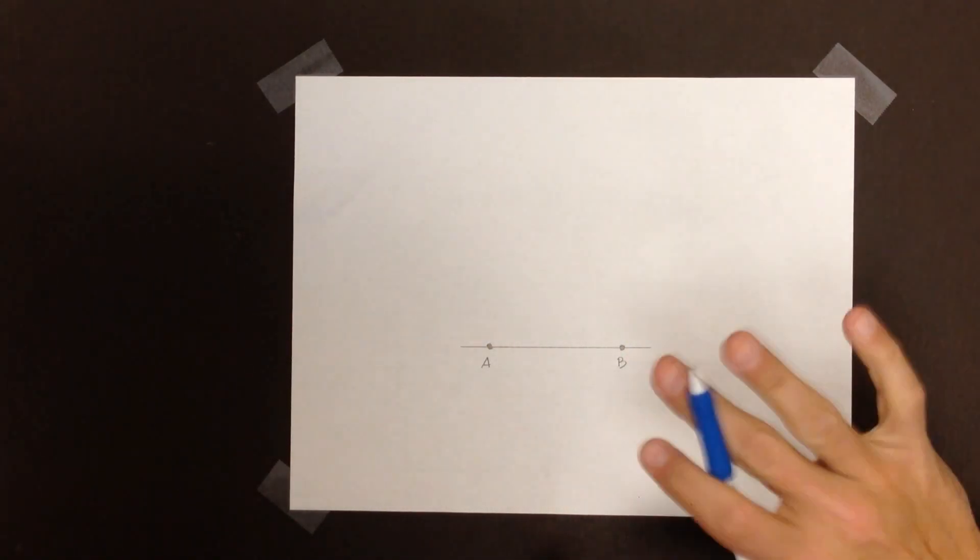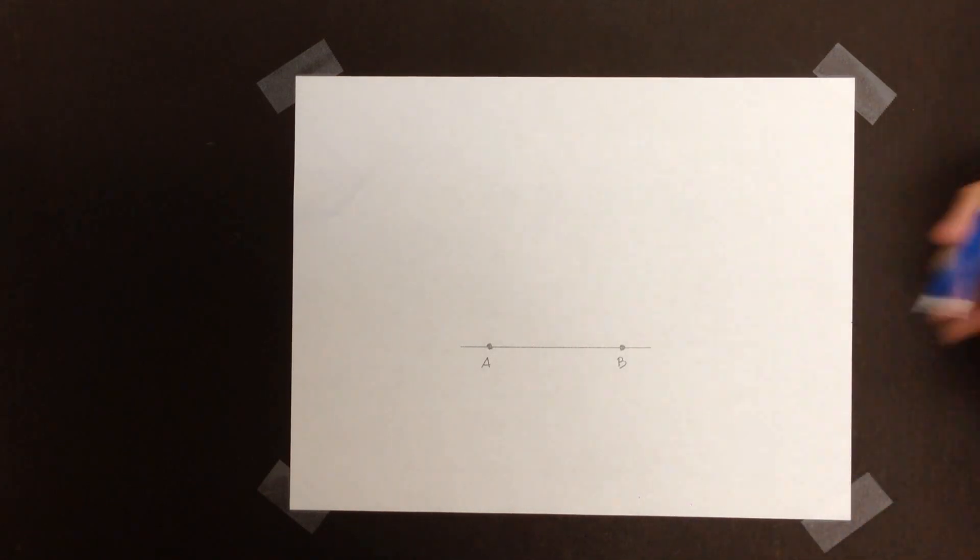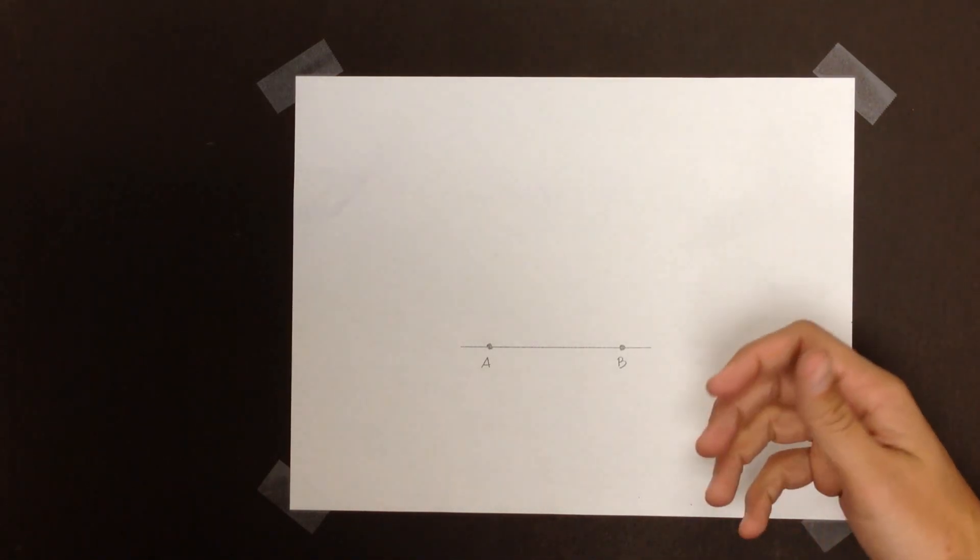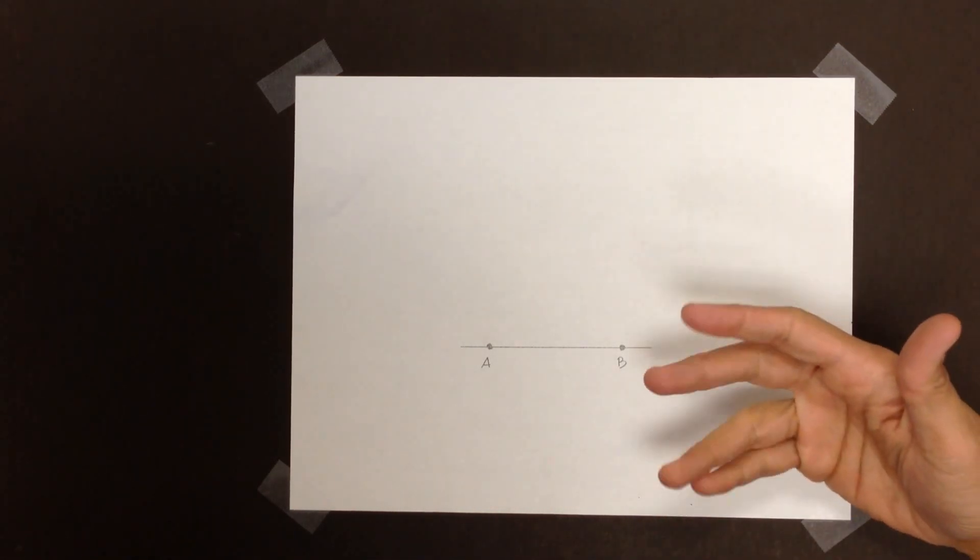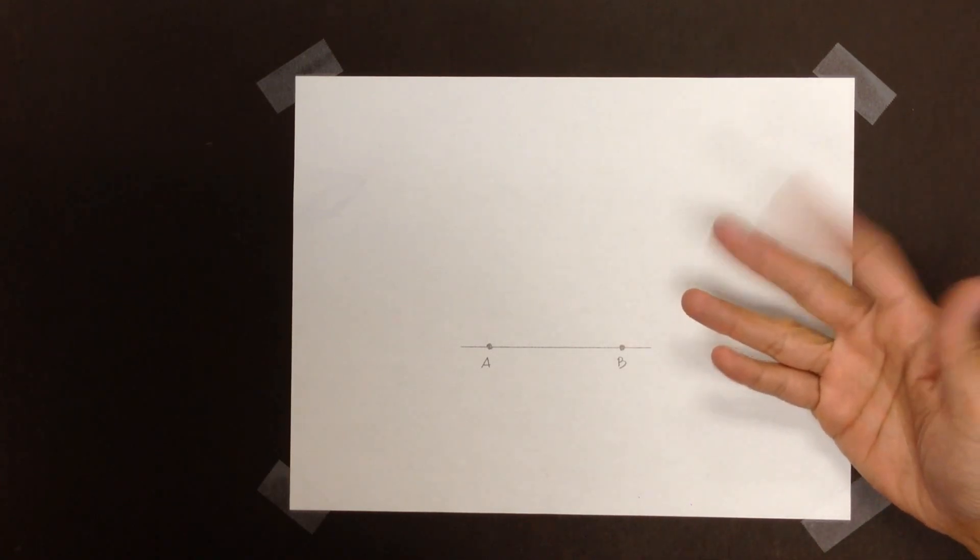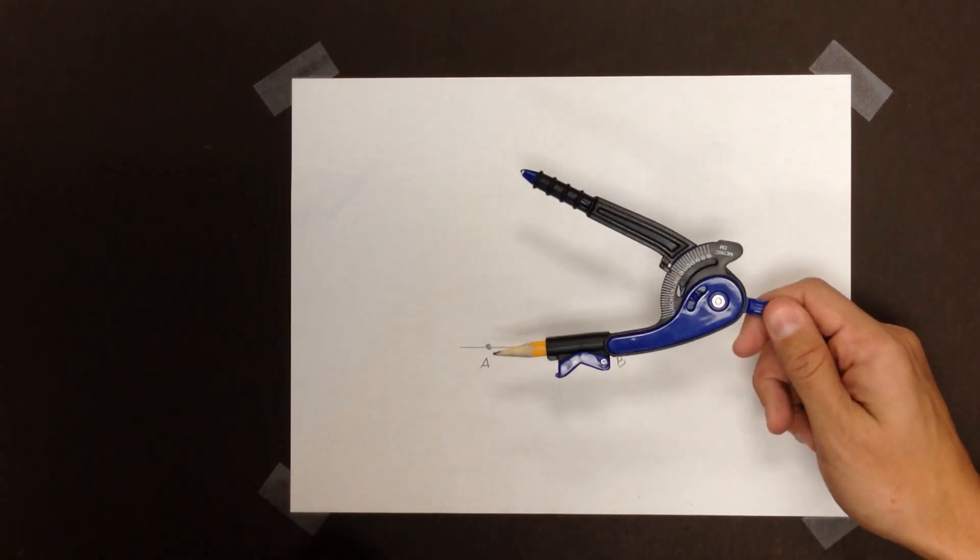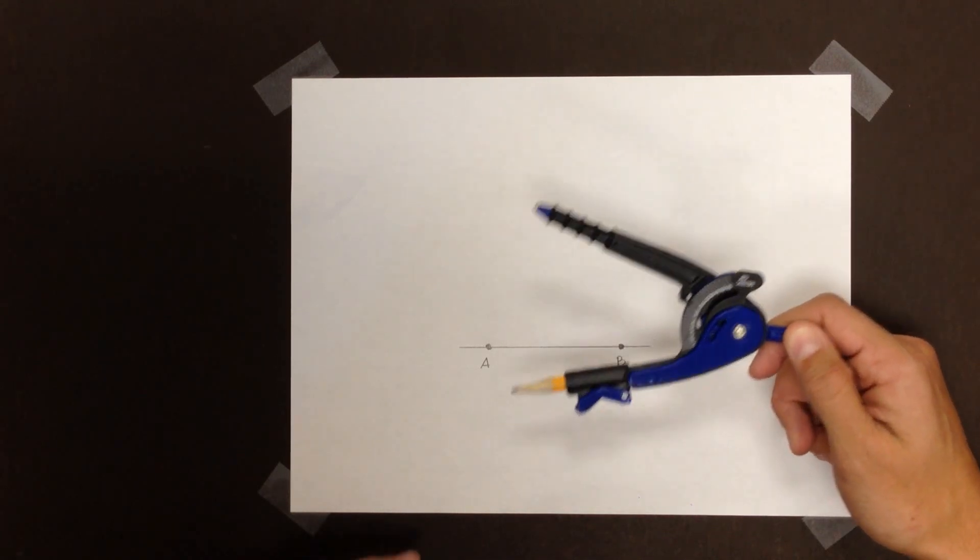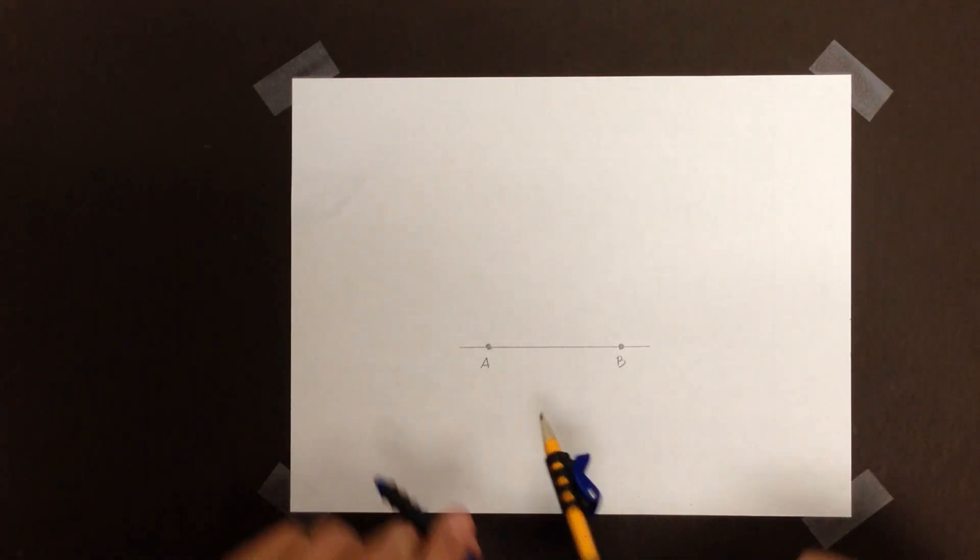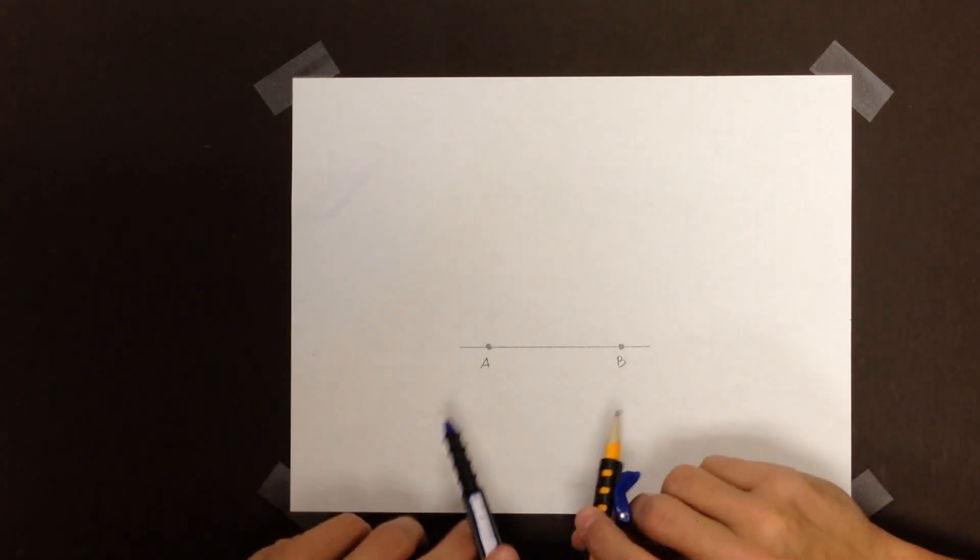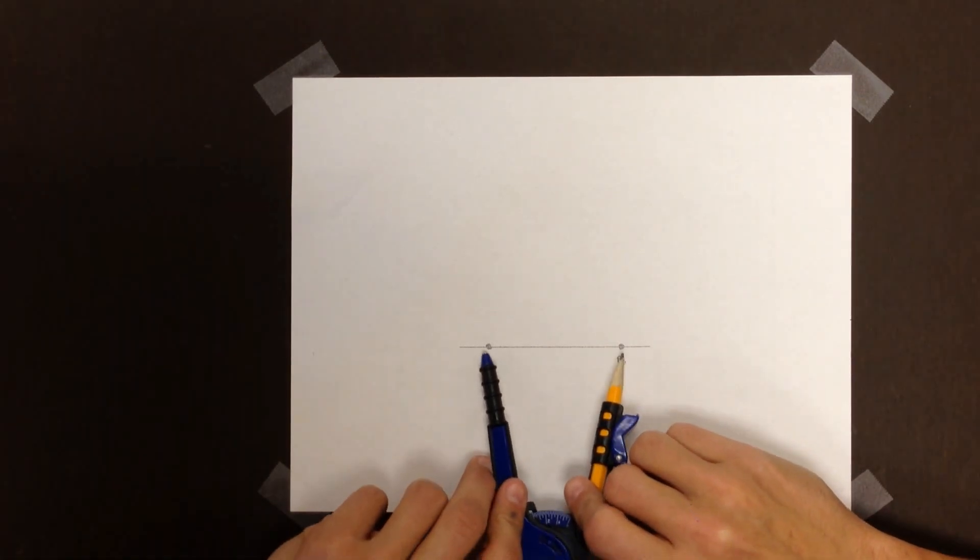Now I want to construct a rhombus. Properties of a rhombus mean that it's a parallelogram except all the sides are congruent. When we want to construct anything with congruent sides, the best tool we can use is a compass. A compass is amazing at ensuring that we can create side lengths that are all congruent.